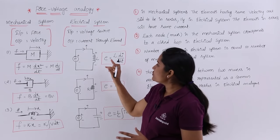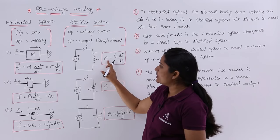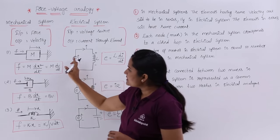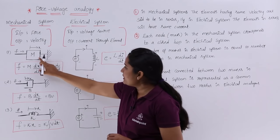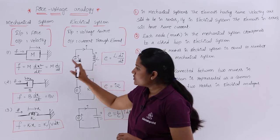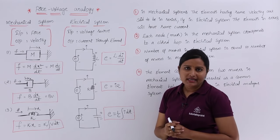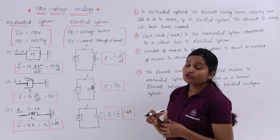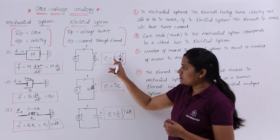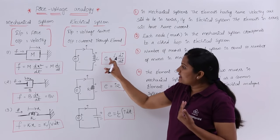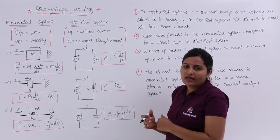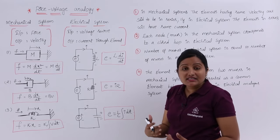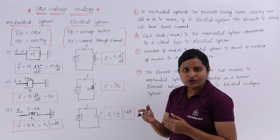In the electrical system, the input voltage source is equivalent to L·dI/dt in terms of output current. So F here is equivalent to E, and M here is equivalent to L. When writing the equation for F, you write the equation for E. E is equivalent to the voltage across the inductor, which is L·dI/dt, where I is the current through the element.